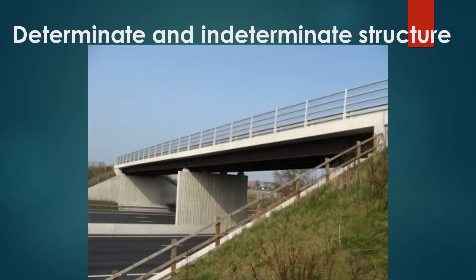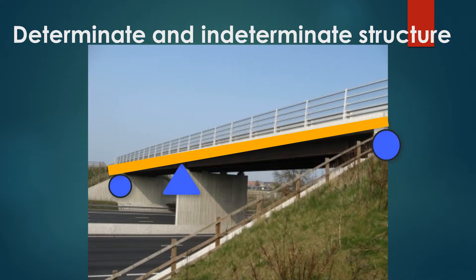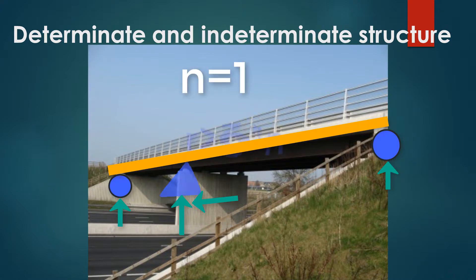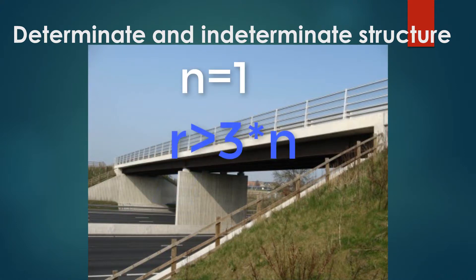This figure shows a bridge with two continuous spans. We have three supports, and for this bridge we have four reactions, giving a total of four unknown reactions. For this bridge n equals 1. Therefore r is more than 3 times n and the structure is indeterminate.